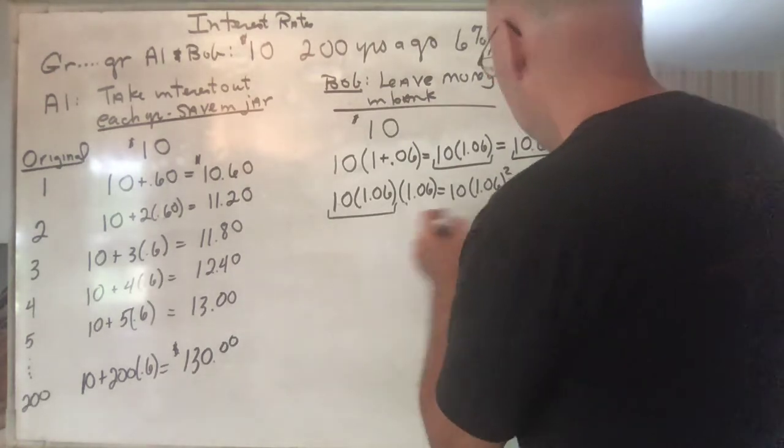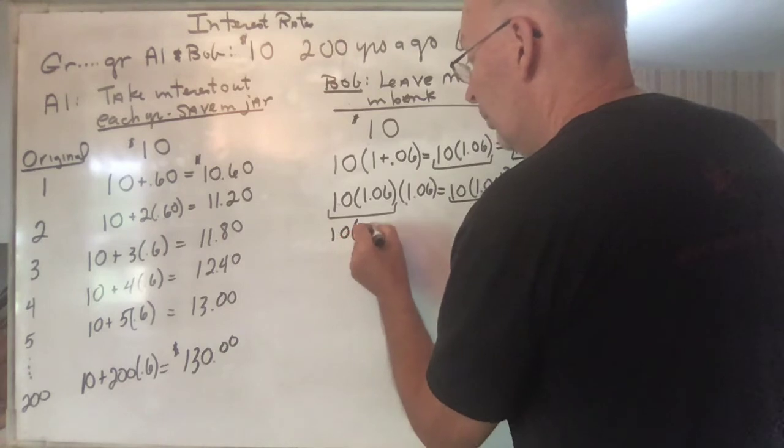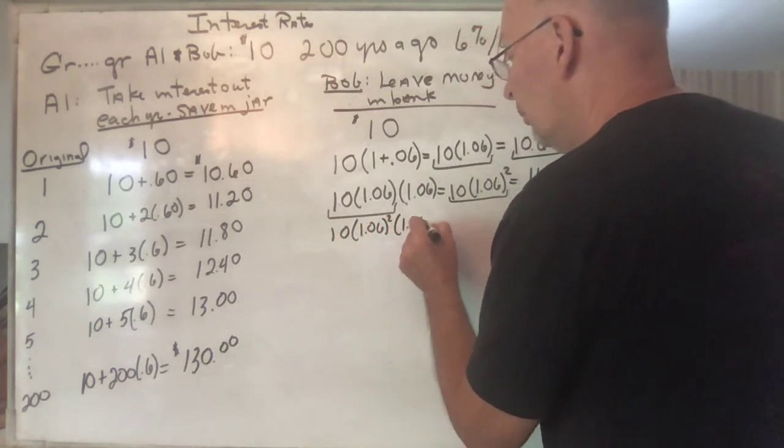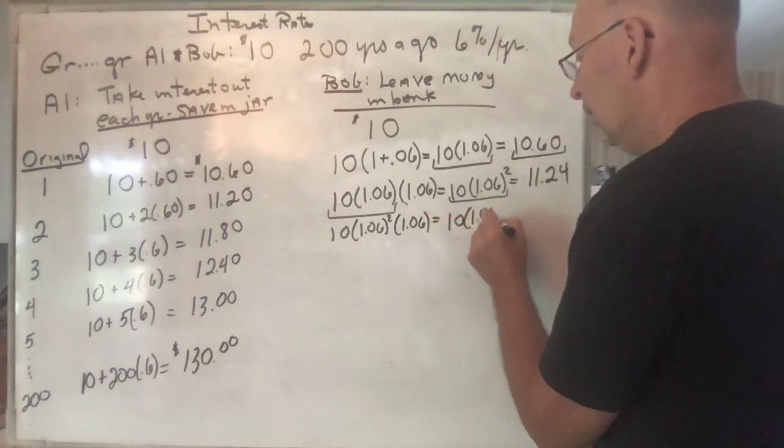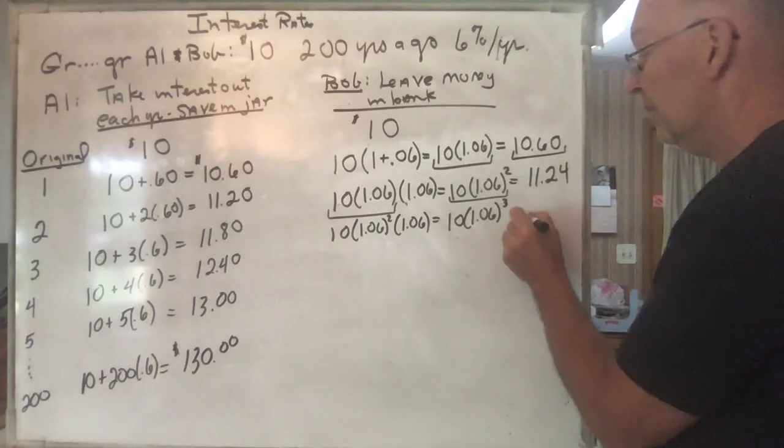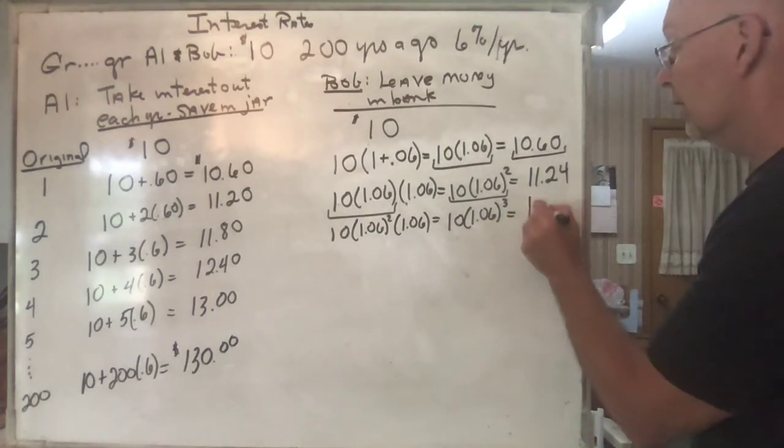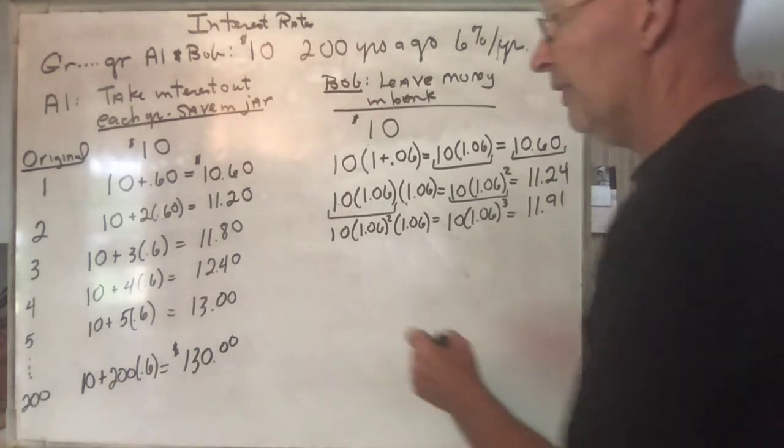At the end of the third year, you're going to have—there's your principal—so it's 10 times 1.06 squared, and now you multiply that by 1.06 again, which is going to be 10 times 1.06 cubed. And so that's going to give you $11.91. So this was 4 cents more, now you're up to 11 cents more. That's at the end of the third year.